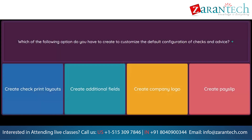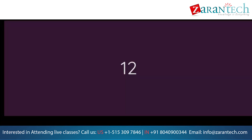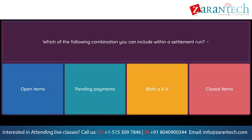Question: Which of the following options do you have to create to customize the default configuration of checks and advice? Option 1: create check print layouts. Option 2: create additional fields. Option 3: create company logo. Option 4: create pay slip. Question: Which of the following can you include within a settlement run? Option 1: open items. Option 2: pending payments. Option 3: both A and B. Option 4: closed items.